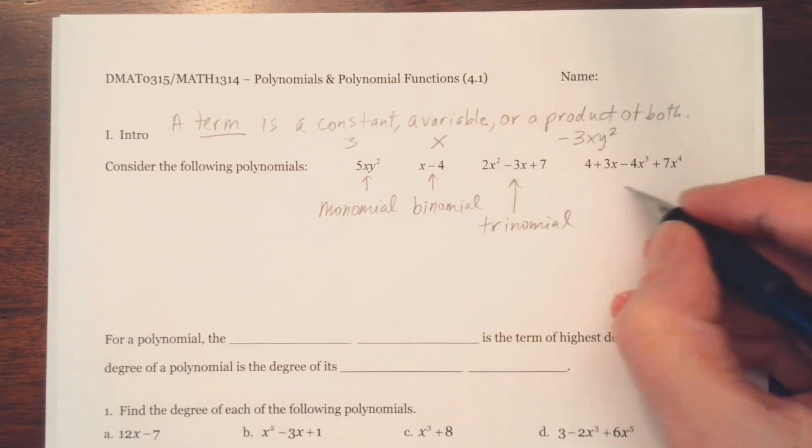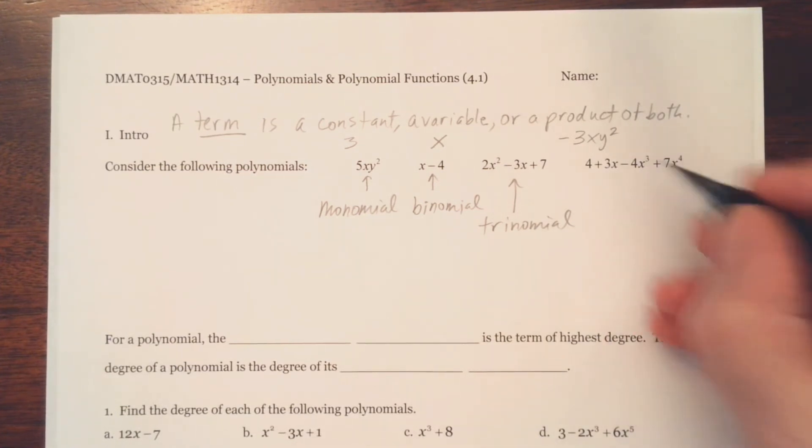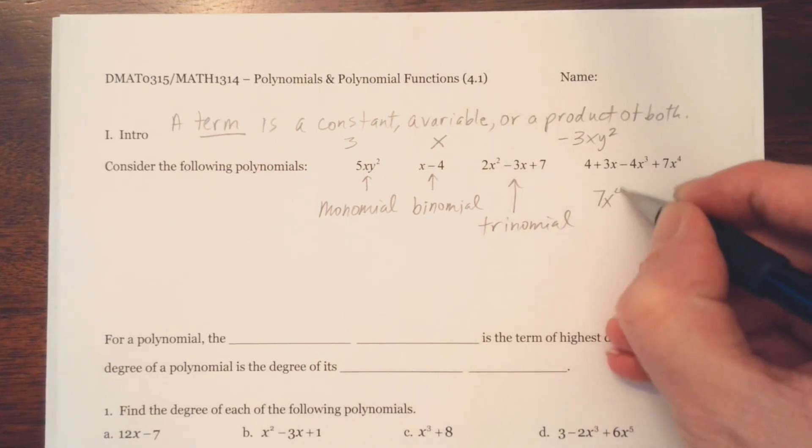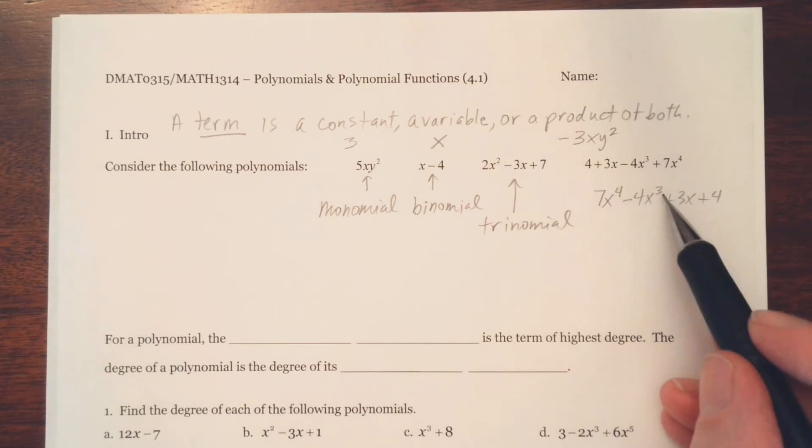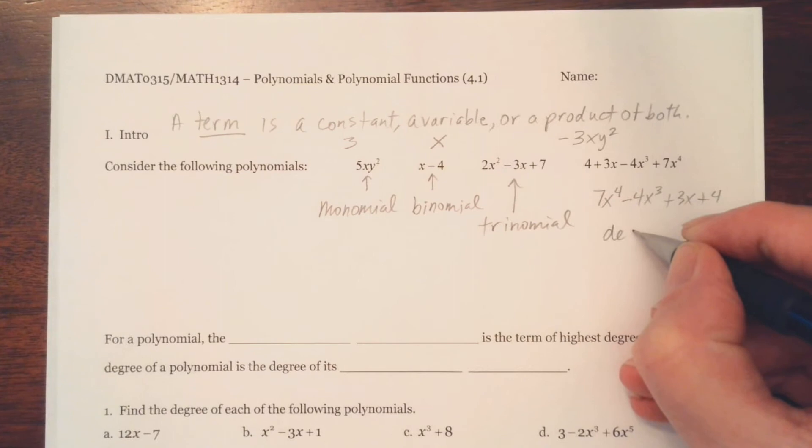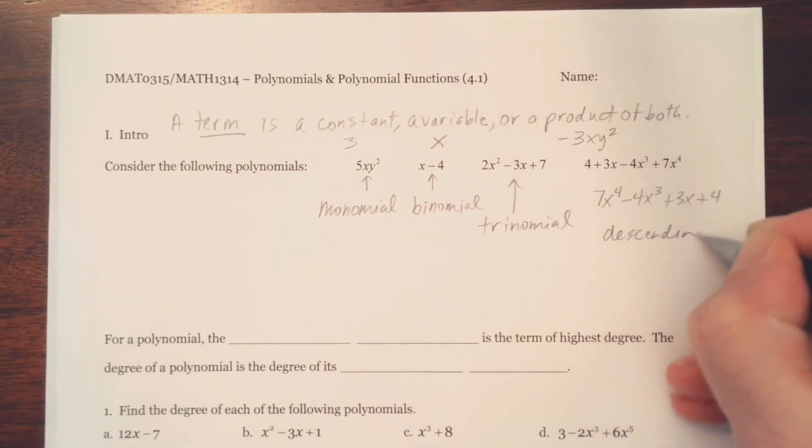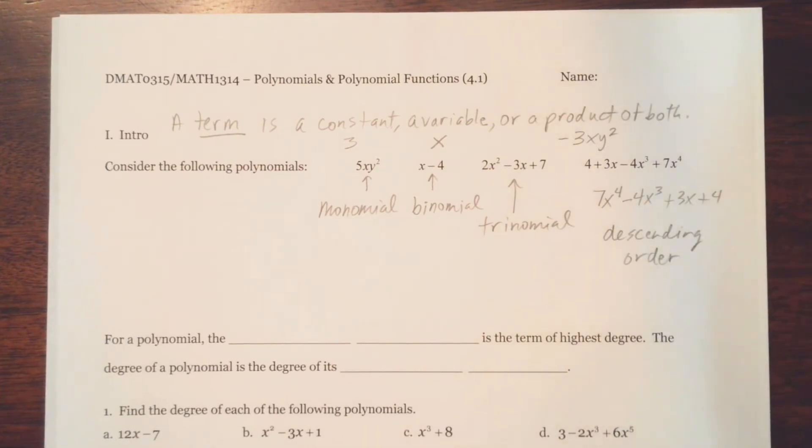There is no special name for this last one here with four terms. However, we would normally write the highest power first. So 7x to the fourth. And then the minus 4x cubed plus 3x and plus 4. Notice the exponents go down as we go from left to right. We say this is written in descending order. And that's the way we normally want to write our answers when we're working with polynomials.